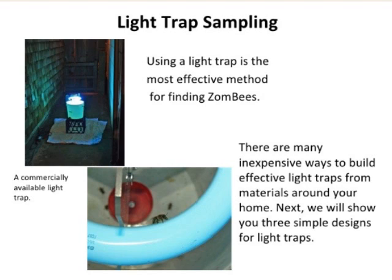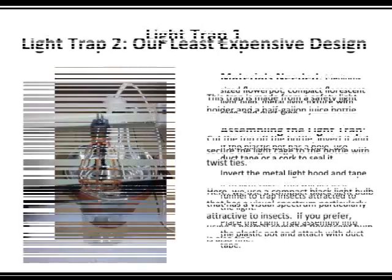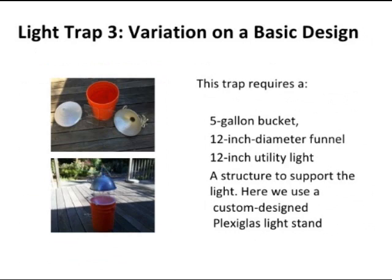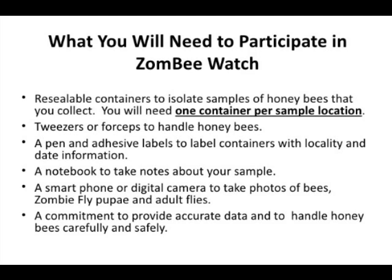Light trap sampling is the most effective method for finding zombies. There are many inexpensive ways to build effective light traps from materials around your home. They will show three simple designs for light traps. The entire tutorial is on the Zombie Bee Watch website, where you can review or even download it.